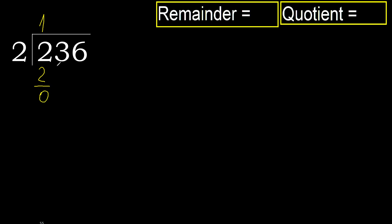Subtract, then bring down the next digit. Eliminate 0 on this side. 3. 2 multiplied by 2 is 4, greater. 2 multiplied by 1 is 2, not greater. Subtract 1.